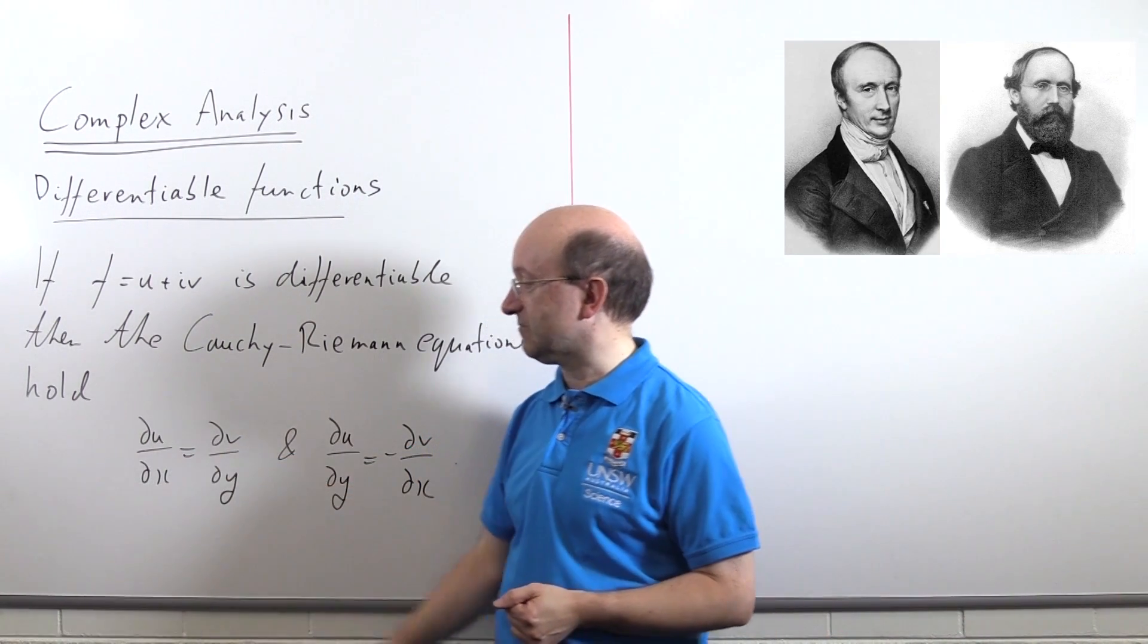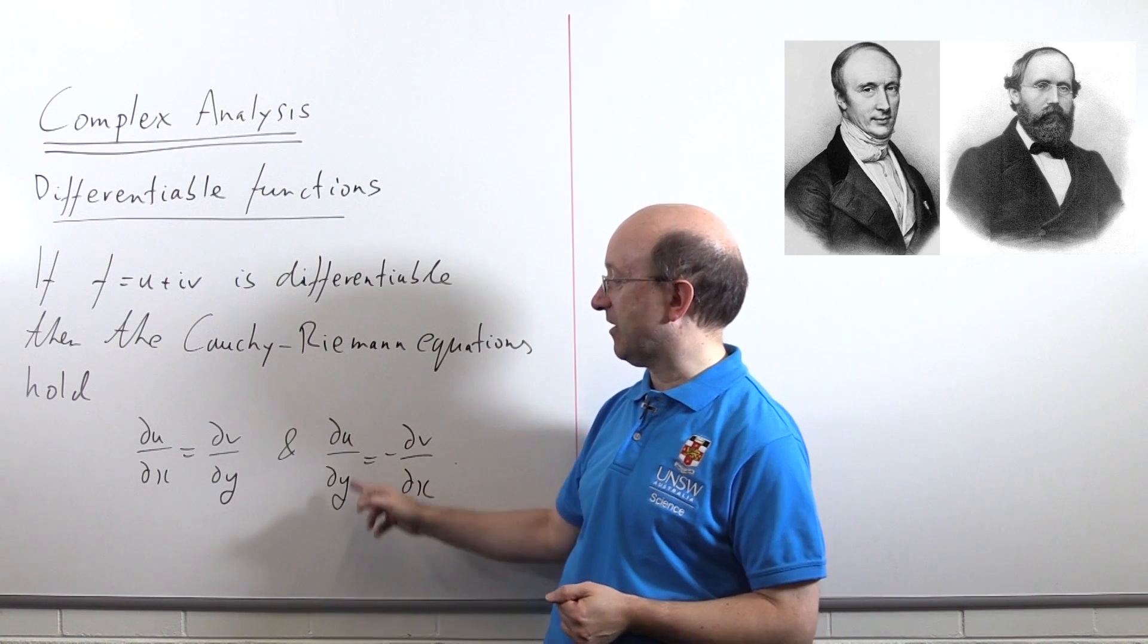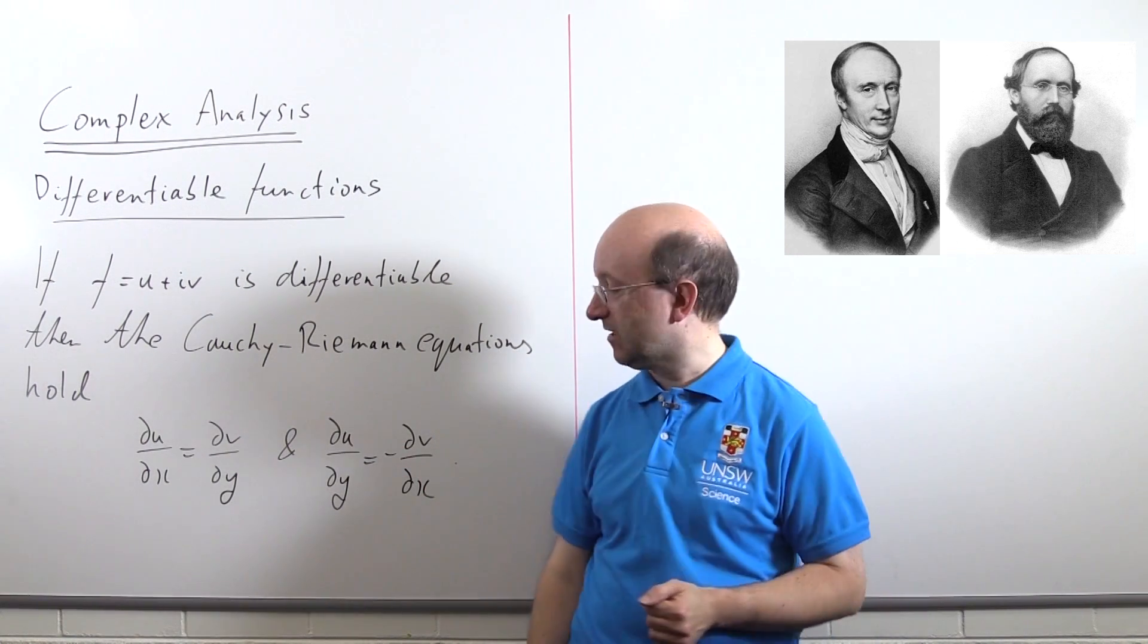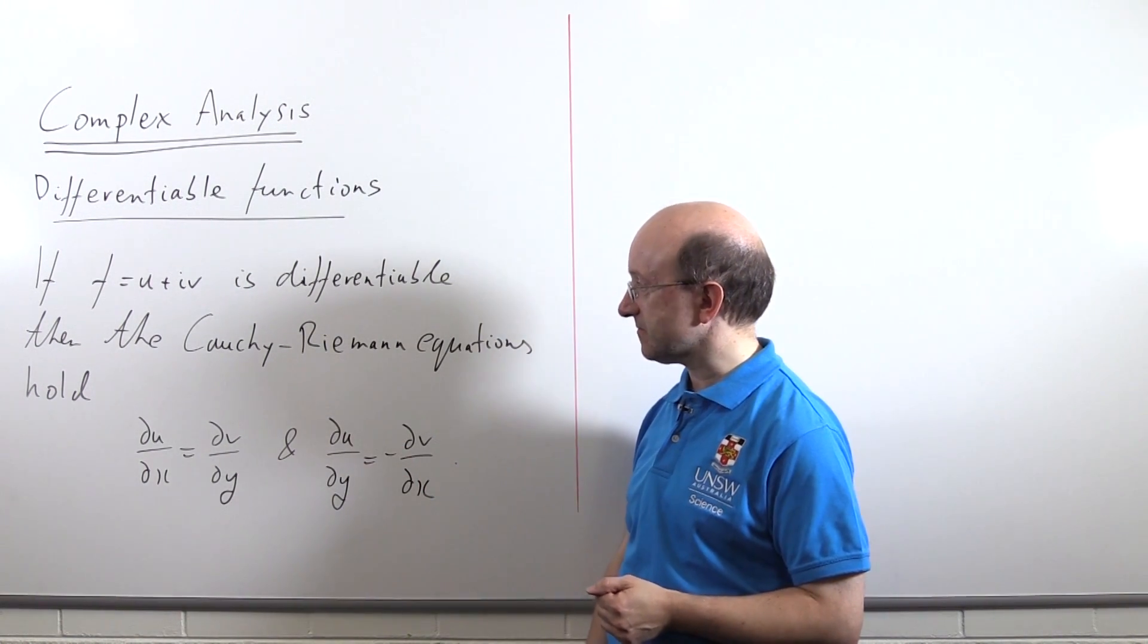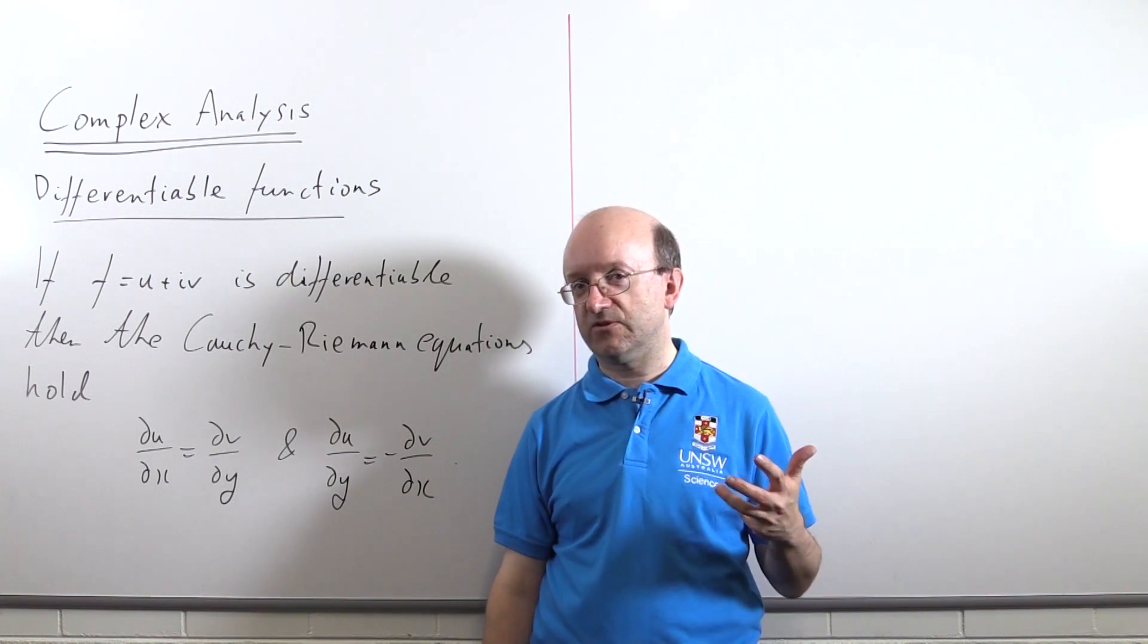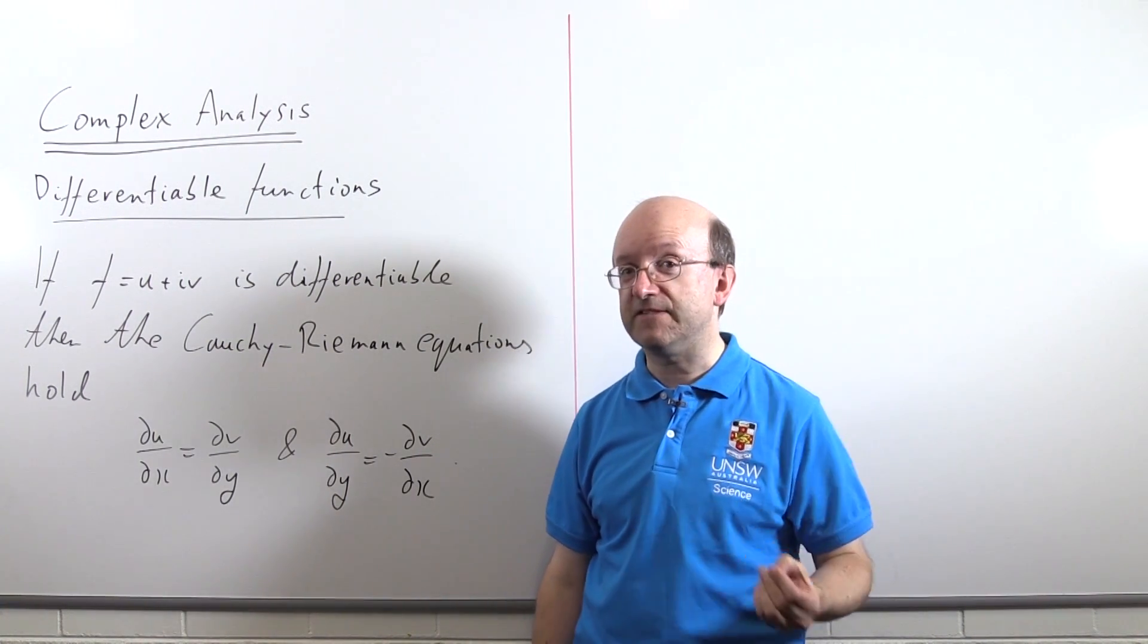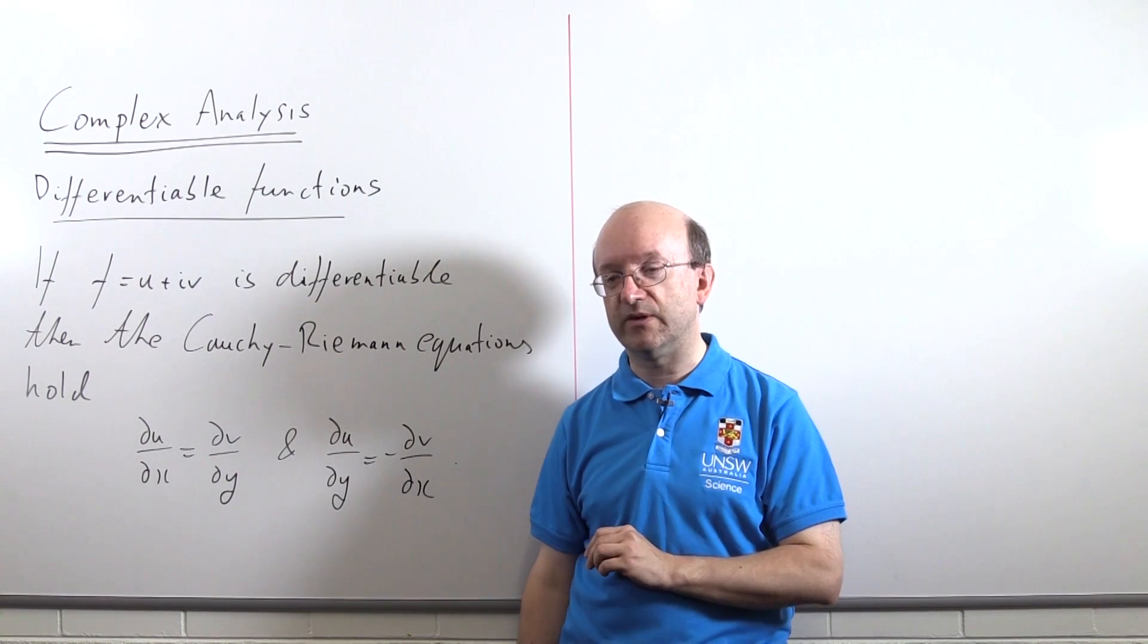Partial du dx must be partial dv dy, and partial du dy is minus partial dv dx. So you've got to be careful that you get that the right way around. If differentiable, then Cauchy-Riemann equations are satisfied.